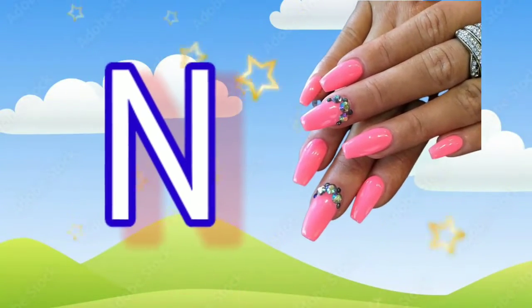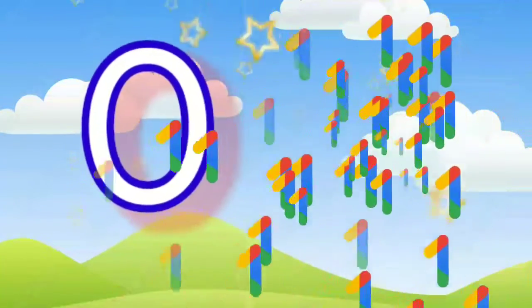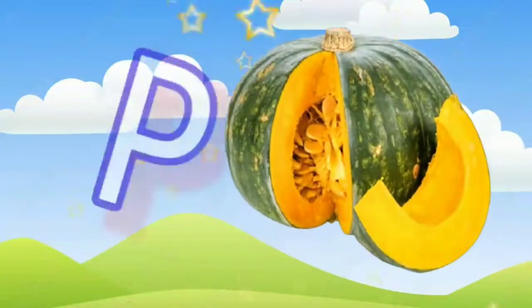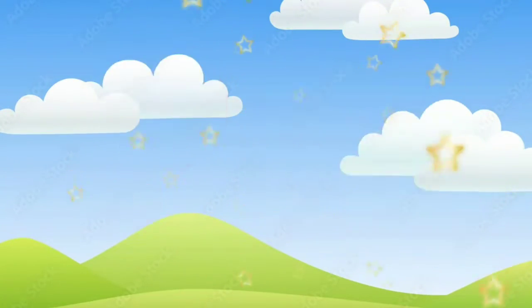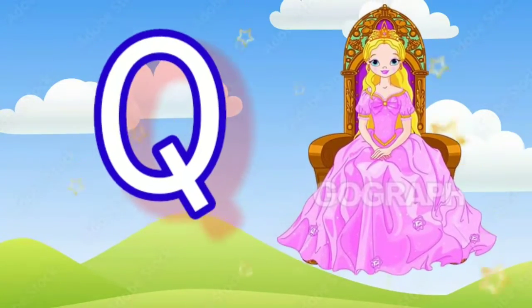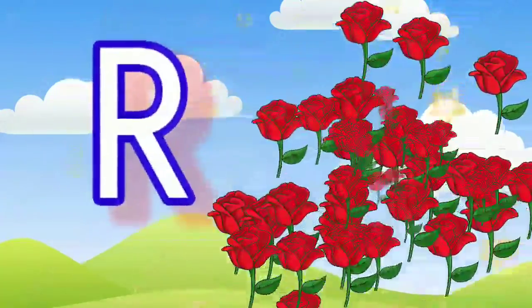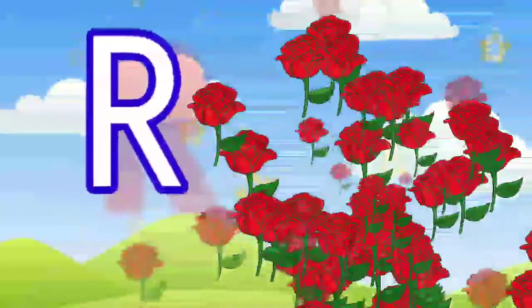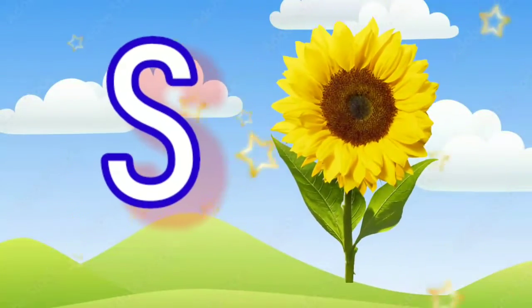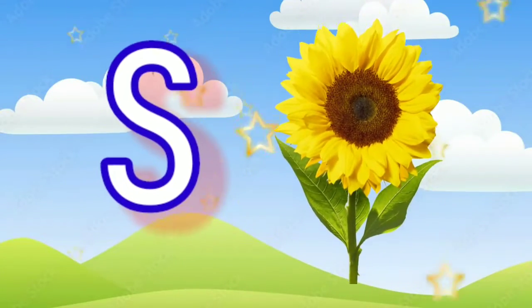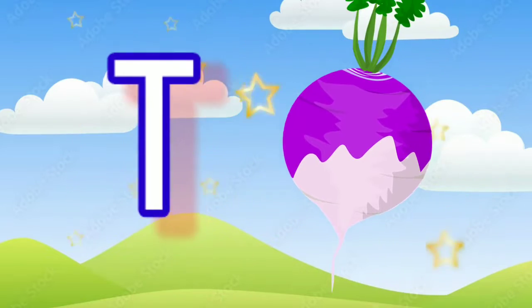O for orange, P for pumpkin, Q for queen, R for rose, S for sunflower, T for turnip.